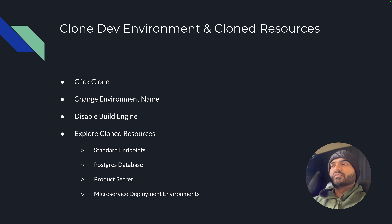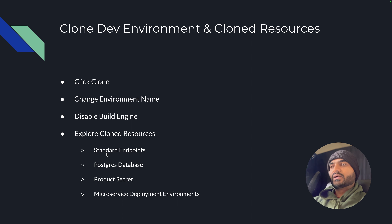The first step is to clone the dev environment and explore the cloned resources. To do that, we will go to console, click on clone, change the environment name, disable the build engine flag, and then move on to exploring the cloned resources — which are standard endpoints, Postgres database, product secret, and microservice deployment environments.